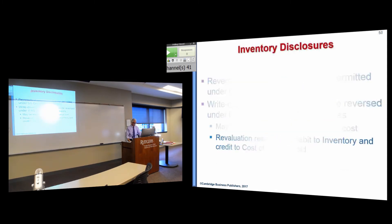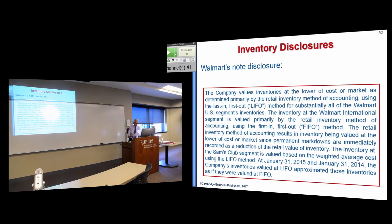Okay. Now, let's go to the disclosure. And this one is from Walmart. Let me just read this through with you and give you a sample of what you'd see out in the field. It tells you that the company values its inventory at lower cost or market. So, now you know what that means. And it tells you that they use last in, first out for substantially all of its US segment inventories. And they use first in, first out for Walmart International. Why? Why don't they use LIFO International?